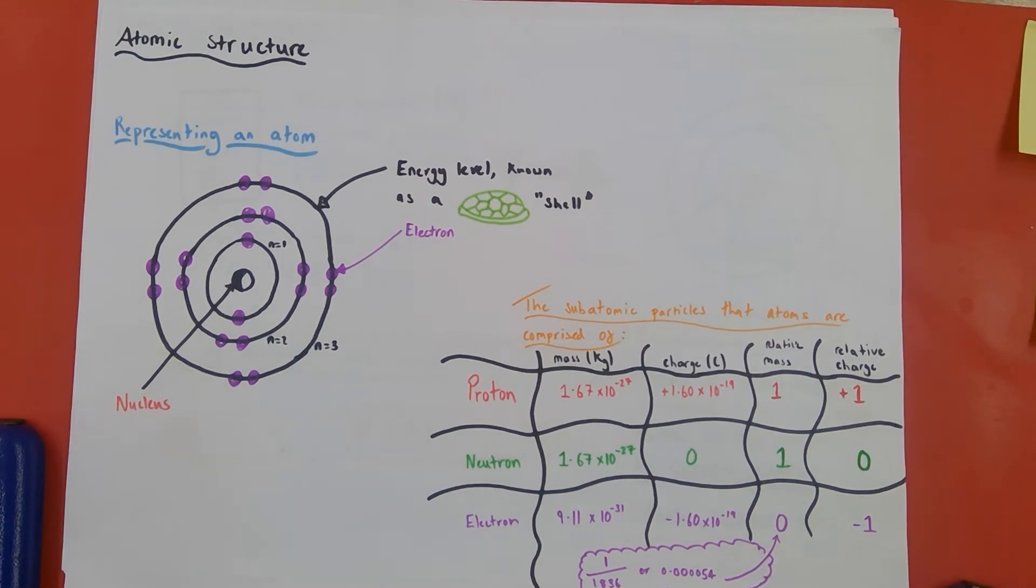This video is going to look at the atomic structure of atoms at GCSE level. We're going to look at how you represent atoms diagrammatically, what they are comprised of in terms of their subatomic particles, and also the electron configurations of atoms of different elements up to element 20, which is calcium.